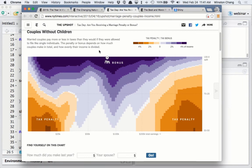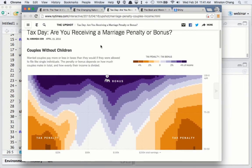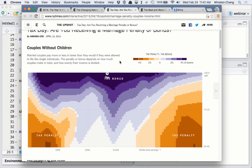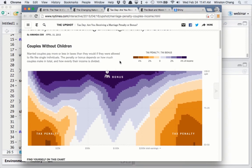Okay, so here's an interactive tax explorer: are you receiving a marriage penalty or bonus? So the idea is that in the United States if you file your taxes as a married couple jointly versus filing separately as two single people, you may end up paying more in taxes or less.